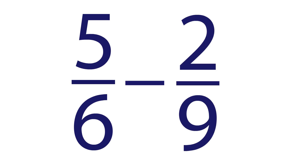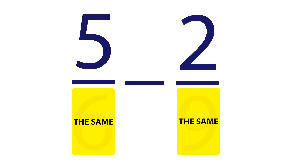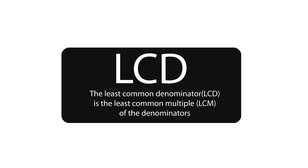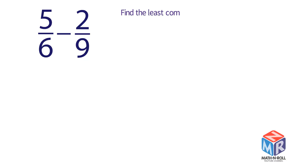Subtraction. 5 sixths minus 2 ninths. We can't subtract fractions with different denominators. Before we can subtract them, we must make sure the denominators are the same. So we need to find the least common denominator of these fractions. The least common denominator is the least common multiple, LCM, of the denominators. The denominators are 6 and 9.